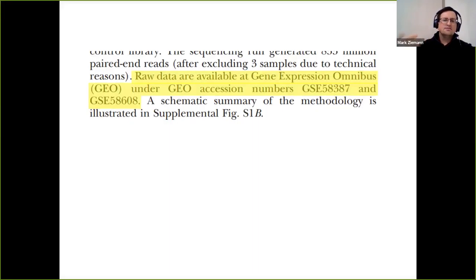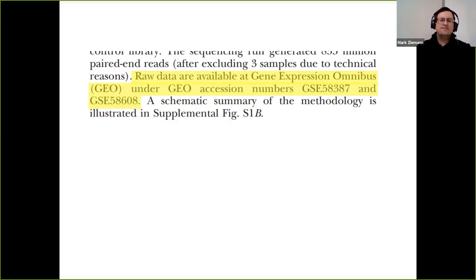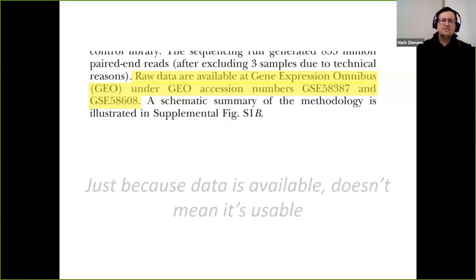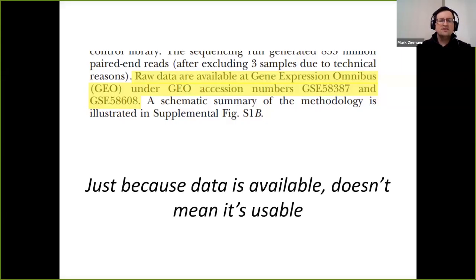Have you ever seen a transcriptome study and were excited to see that the data was available at NCBI under certain GEO accession numbers, and then tried to download the data and found that the gene identifiers don't match what you've got, or perhaps the pipeline is just wildly different to the one that you're using? These are really holding us back towards reuse of these data. Just because these data are available in GEO, it doesn't mean it's actually reusable.